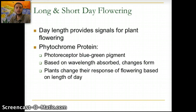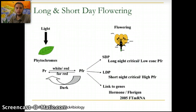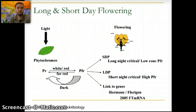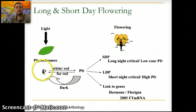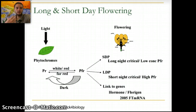The phytochrome protein absorbs either red light at around 660 nanometers — called PR — or far-red light at 730 nanometers — called PFR. When PR is exposed to light, it is converted to PFR, and the PFR actually controls the onset of flowering. This flowering process falls into one of two categories: short-day flowering plants or long-day flowering plants.